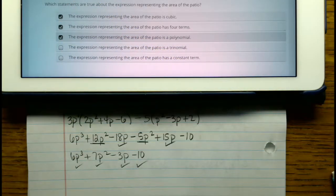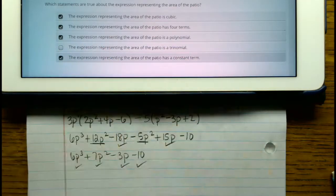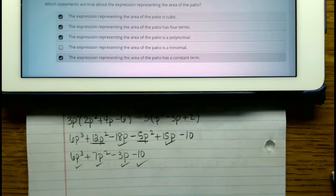The expression representing the area of the patio is a trinomial. Well, trinomial, tri means 3, so that is untrue. And then finally, the expression representing the area of the patio has a constant term. That is true. The minus 10 is the constant term.